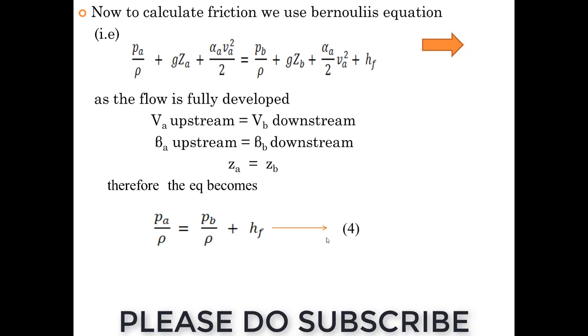For Bernoulli's equation, one side PA by rho plus gZA plus half rho VA squared equals PB by rho plus gZB plus half rho VB squared plus HF. HF is the head loss due to friction. We already know that ZA and ZB were zero or equal to same values, ZA equals ZB.